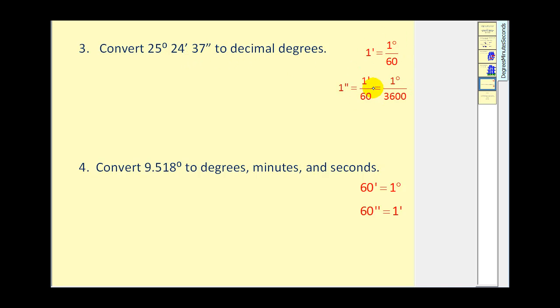We'll leave the 25 as is. But we need to convert 24 minutes into degrees. Each minute equals 1/60th of a degree, which means we'll have 24/60ths of a degree. Plus we have 37 seconds. Each second equals 1/3600th of a degree. So we'll have 37 divided by 3600 degrees.